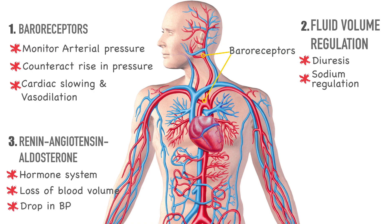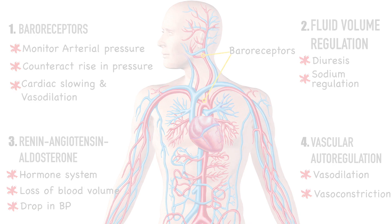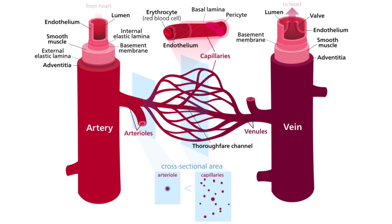Number four is vascular autoregulation. This process, which keeps perfusion of tissues in the body relatively constant, appears to be important in causing hypertension. However, the exact mechanism of how this system works is not fully understood.